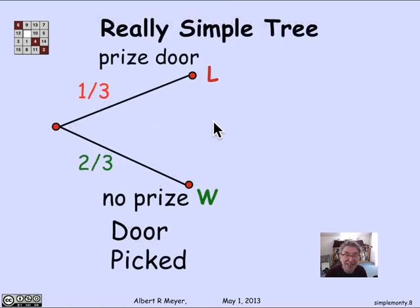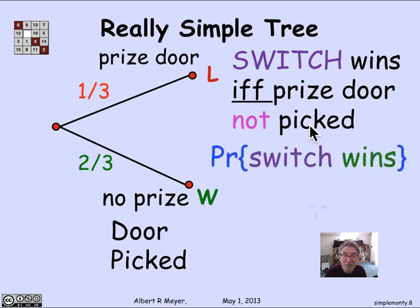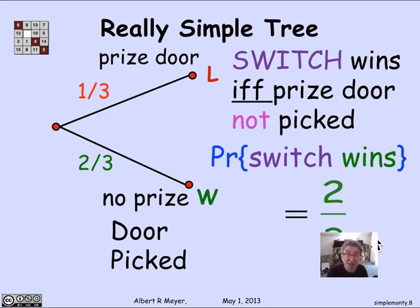There it is. And what we can read off immediately is that with the switch strategy, the probability of winning is two-thirds. So the switch wins if and only if the prize door is not picked, which means the probability that switch wins is two-thirds — which is what we already figured out using the more complicated tree. But this way of getting at it is a lot clearer.